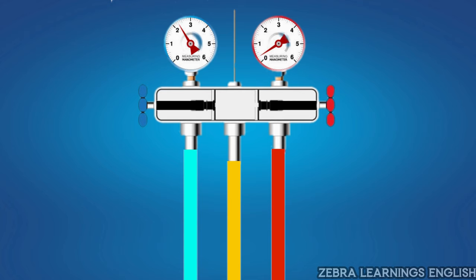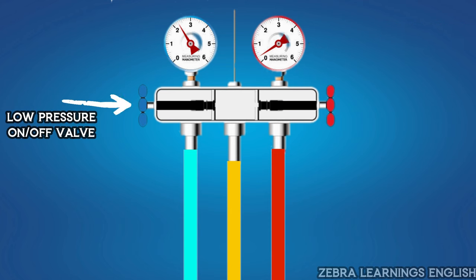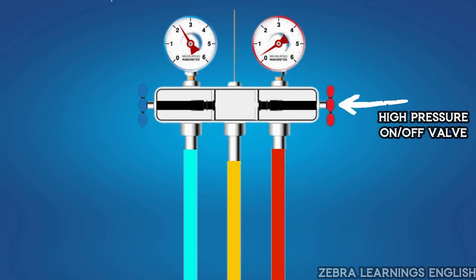Now let's see how it works. This is the cross-sectional image of manifold gauge. This is low pressure gauge. This is high pressure gauge. This is the on-off valve in the low pressure gauge. This is the on-off valve in the high pressure gauge.